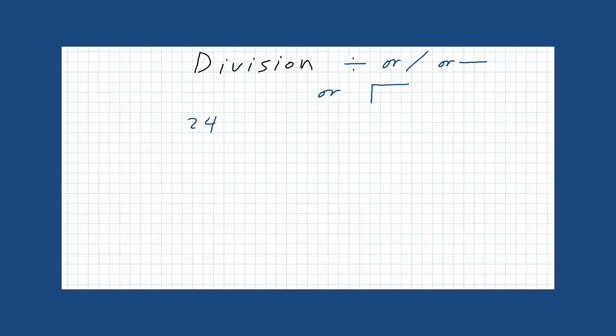24 divided by 3 can be written as 24 over 3, or 24 over 3. 24, if we want to divide it by 3, we know that the answer is 8. And 8 times 3 is 24. If we subtract these two answers, we have a 0.